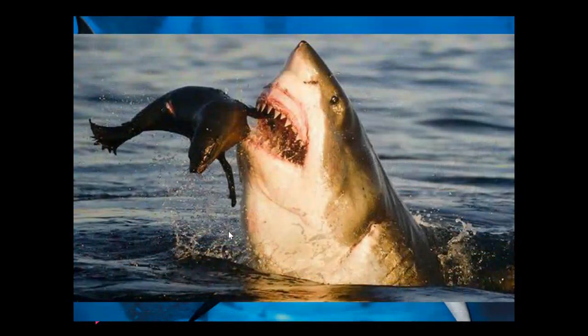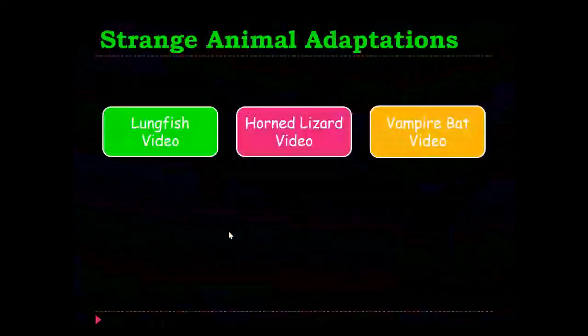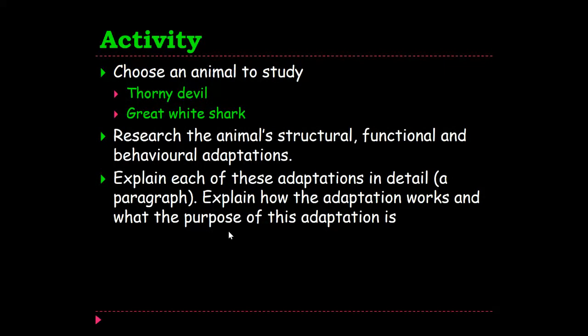Now we have the great white shark — one of the top hunters of the ocean along with the orca whale — the result of generations and generations of adaptation. There's also a video on the evolution and adaptations of genitalia in the animal kingdom — you would think they all have fairly similar genitalia to a male and female human being, but that could not be further from the truth. I strongly suggest you have a watch of that — very interesting. And this is the activity I'd like you to complete today — have a go at that and message me if you have any questions.